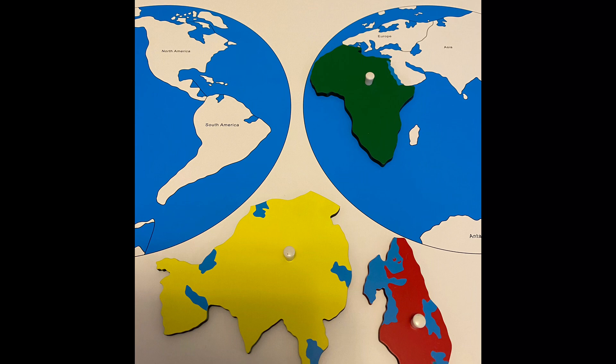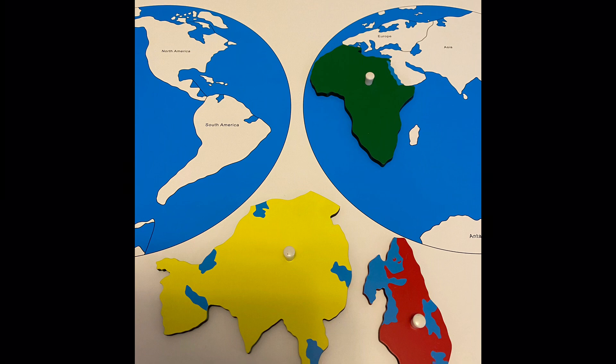Have the child look at the map and ask what things are the same on the globe and map. Let the child know that each continent on the globe can be found on the map in the same color, and the oceans as well.